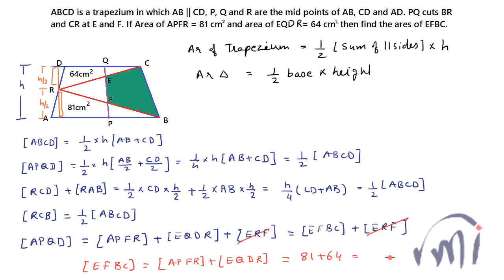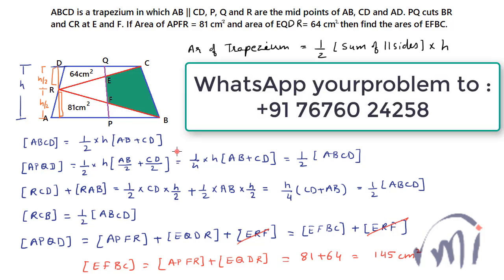The area of APFR is 81 cm² and EQDR is 64 cm², so the area of quadrilateral EFBC equals 145 cm². That was the solution. For more interesting problems, keep watching, subscribe, and WhatsApp your problems to the number shown on screen. Don't forget to press the notification bell to get updates on new videos.